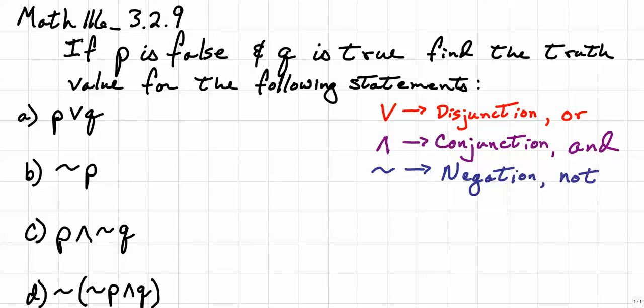So let's look at this first one, part A. Part A is rewritten as P - remember, that symbol is a disjunction - OR Q. We know from our statement that P is false, and we know that Q is true. So I can write this as false OR true.